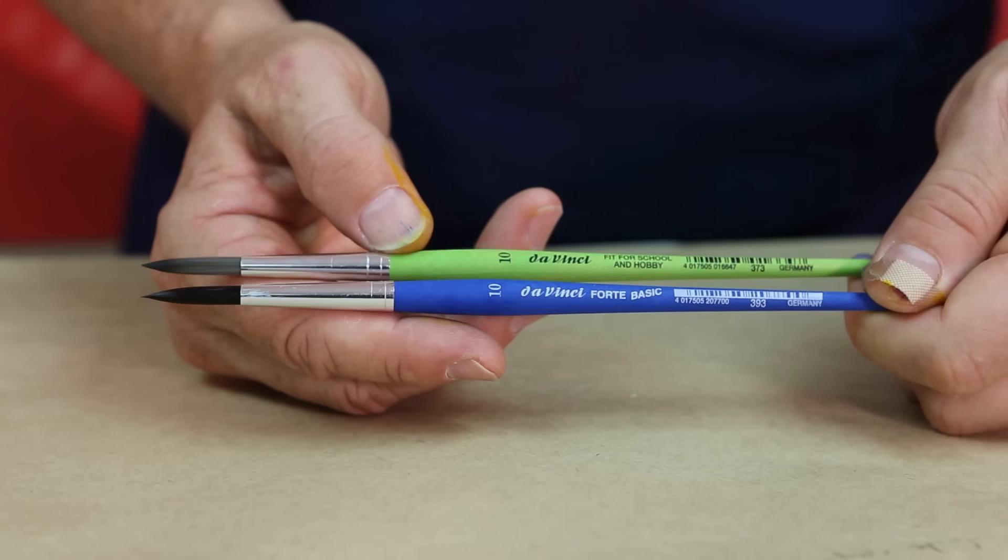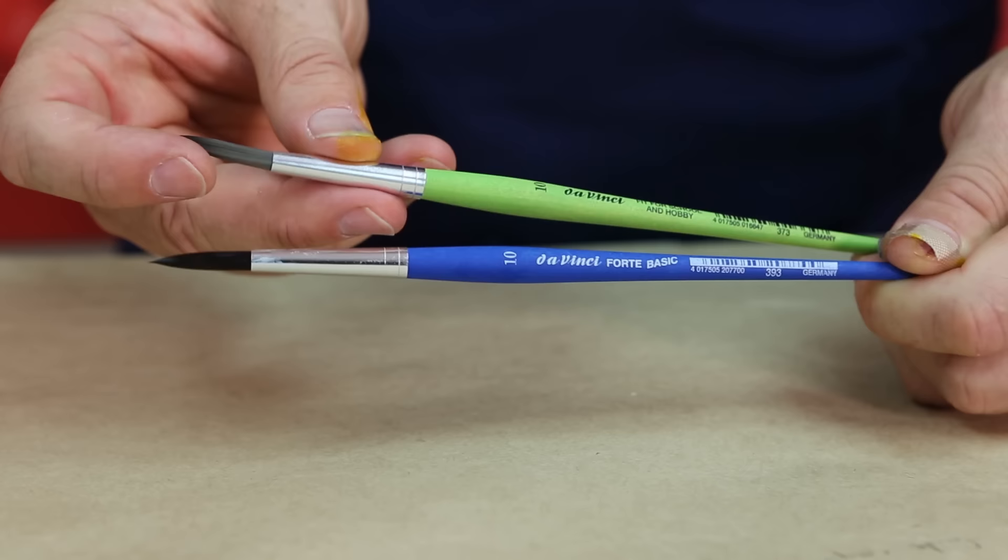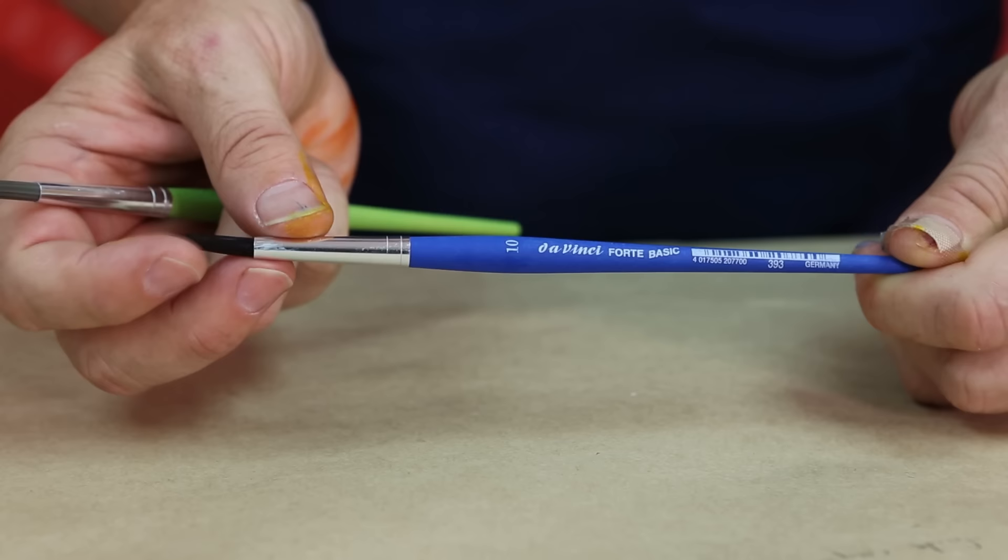The DaVinci Forte brush complements our existing range of very popular hobby brushes, but whereas the hobby brush is a very soft fibre, the Forte is a stiffer fibre, perfect for use with heavy body acrylics.